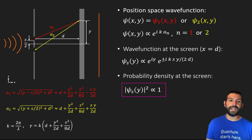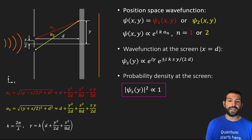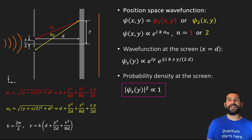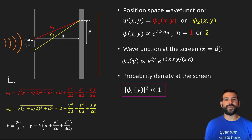Having now established all these details about how the double-slit experiment works, in the next video we'll see how we can construct a quantum circuit that behaves in a very similar way to what we have described here. And then after that, we'll go into the same level of detail for the delayed choice quantum eraser to really understand what's going on in this very mysterious experiment.